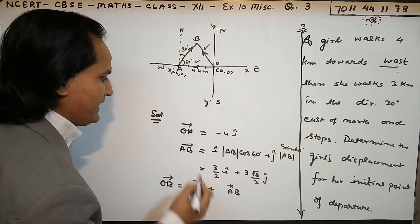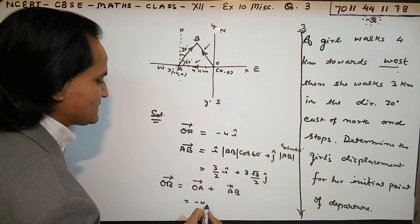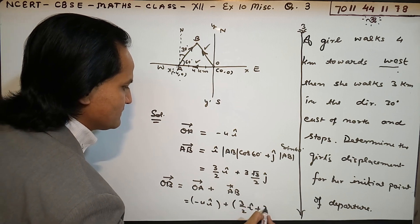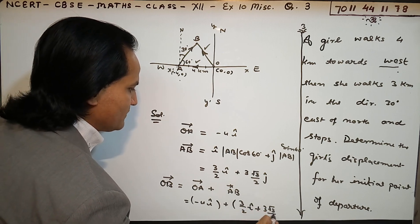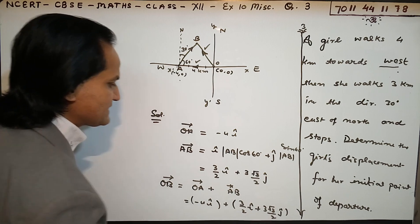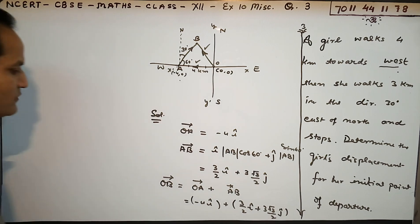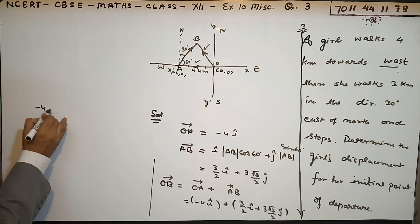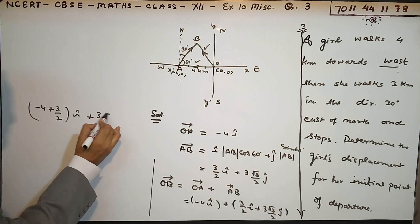So OA is -4i. You need to add this with 3/2 i plus 3 root 3 over 2 j. Adding these together: -4 here, plus 3/2 i, plus 3 root 3 over 2 j.